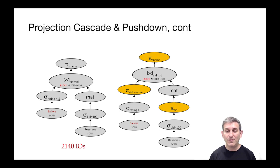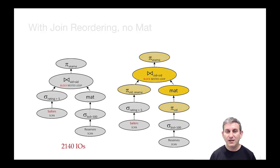When we think about projecting on the right-hand side, remember we already selected a single boat ID, so that was 1 tenth of the pages. Now we're just selecting a single column of that boat ID, so this is becoming a very small thing to materialize on the right. So small in fact that it'll fit into one buffer of memory, which might inspire us, instead of thinking about this query plan, to go directly to a reordered plan with no materialization.